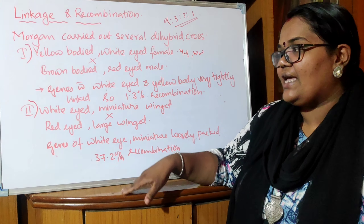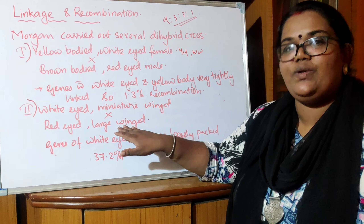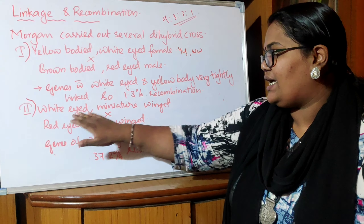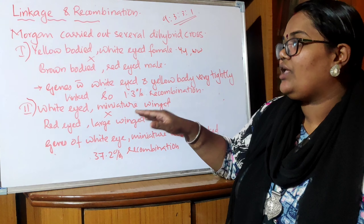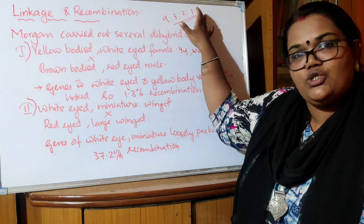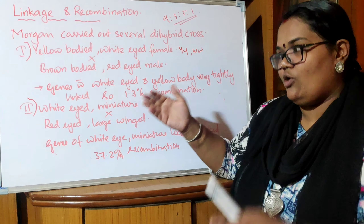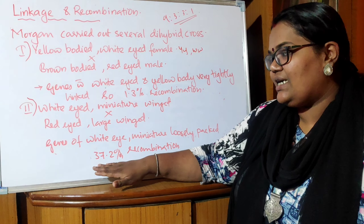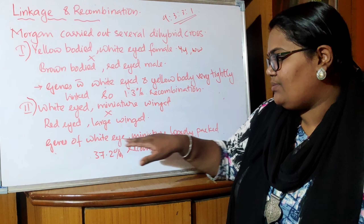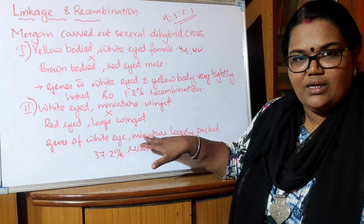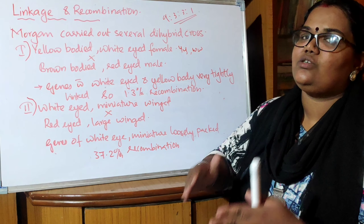He also crossed white-eyed, miniature-winged Drosophila with red-eyed, large-winged Drosophila. Here also, according to Mendel's law, the F2 ratio must be 9:3:3:1, but he did not get that ratio. Instead, considering the entire population, 37.2% was the recombinant type. But a significant portion of the population was still the white-eyed, miniature-winged type. From this he understood that these were also linked genes, being carried as such to the offspring.